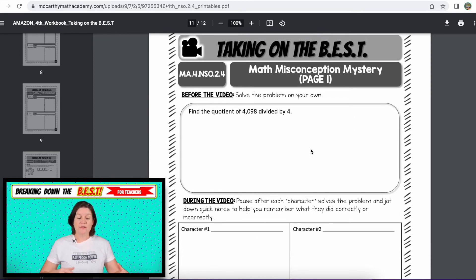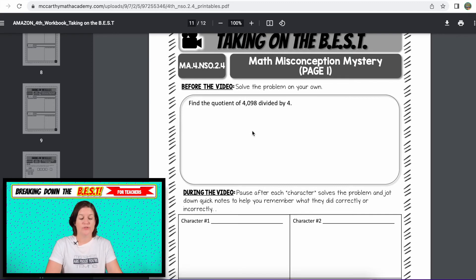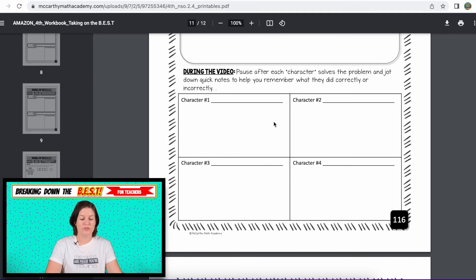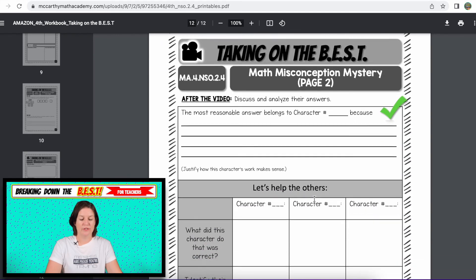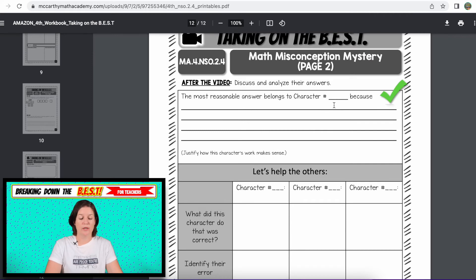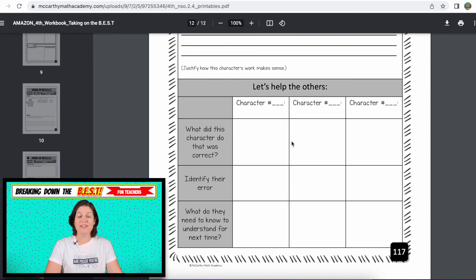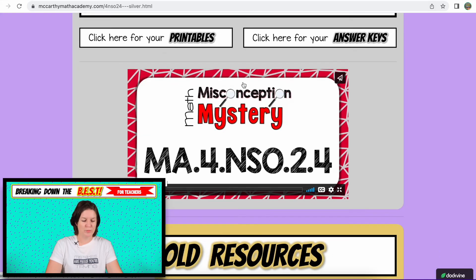For math misconception mystery, that's that other video. For that video, I walk everybody through the whole process. This is the question that they will solve. Your students will solve this question first. And then there's going to be four characters, which are me dressed up as silly characters, who three of them solve the problem incorrectly, making a mistake that students commonly make. And only one of them solves it correctly with the most reasonable answer. So they'll solve it first on their own or with their group. Then they'll watch the characters and jot down notes here. And then they'll fill out their detective report. Who does the most reasonable answer belong to? And what about the other characters? What did they do that was correct? What did they do that was incorrect? What was their error? And what do they need to know for next time? Super, super fun.